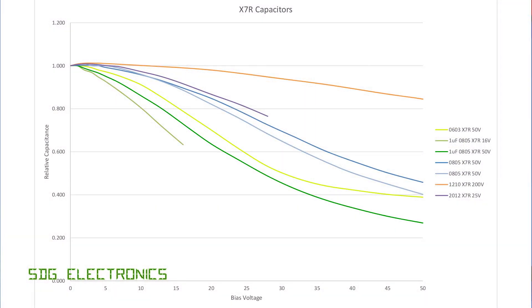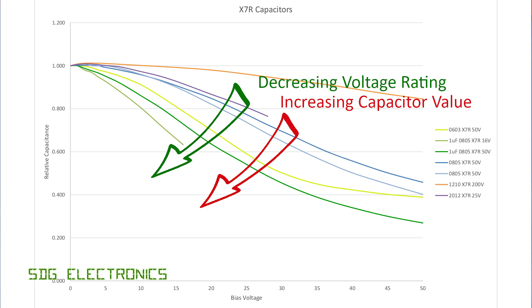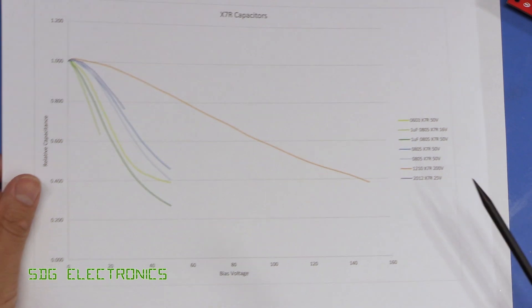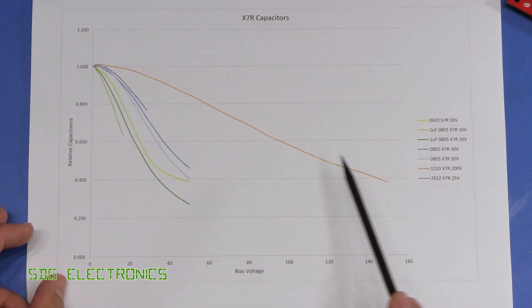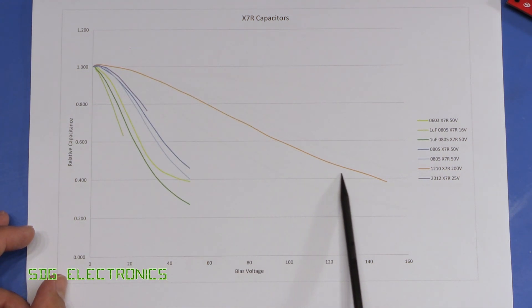Then we've got basically the same story as before. So as the capacitor size, physical dimensions increase, the decline in capacitance value is slower. And I did test that 200 volt capacitor all the way up to 150 volts, which is about as much as I could take it to, and you can see it follows exactly the same shape.